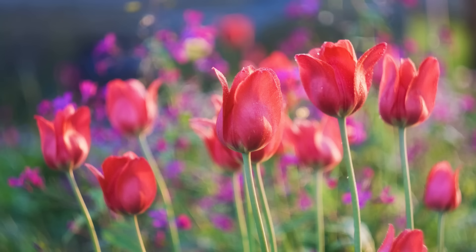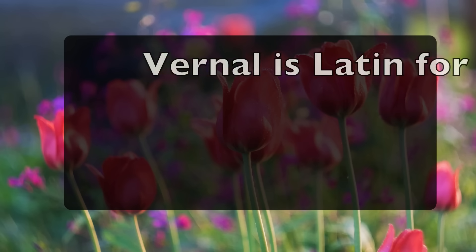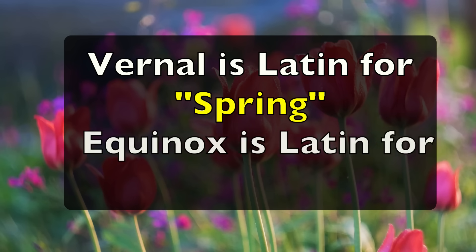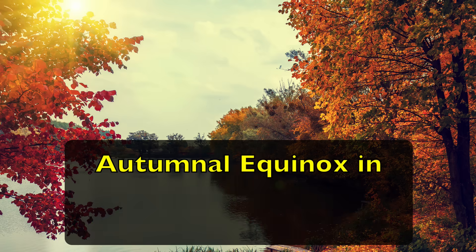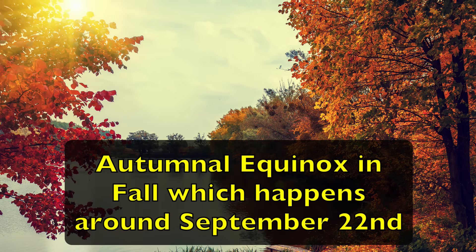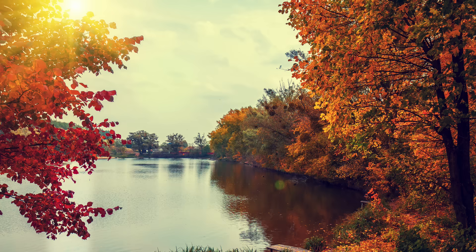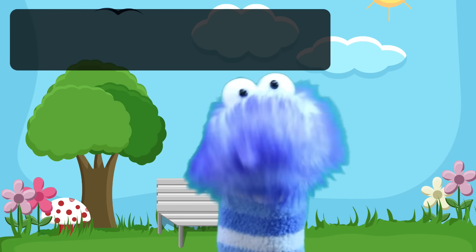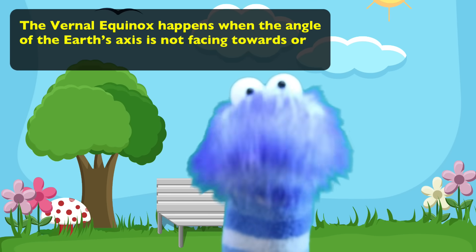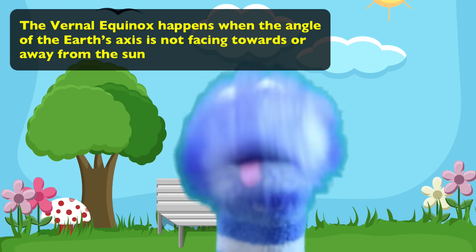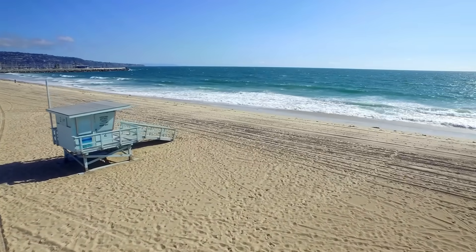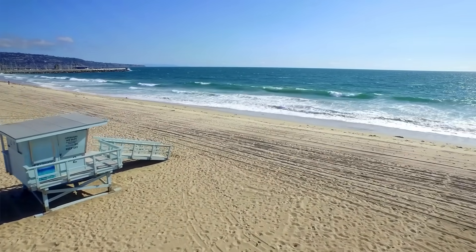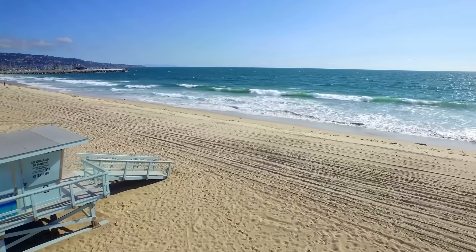The word vernal is Latin for spring, and equinox is Latin for equal days. This also occurs during the autumnal equinox in the fall, which happens around September 22nd. The vernal equinox happens when the angle of the Earth's axis is not facing towards or away from the sun. Daytime length begins to last longer as nighttime gets shorter as the season progresses.